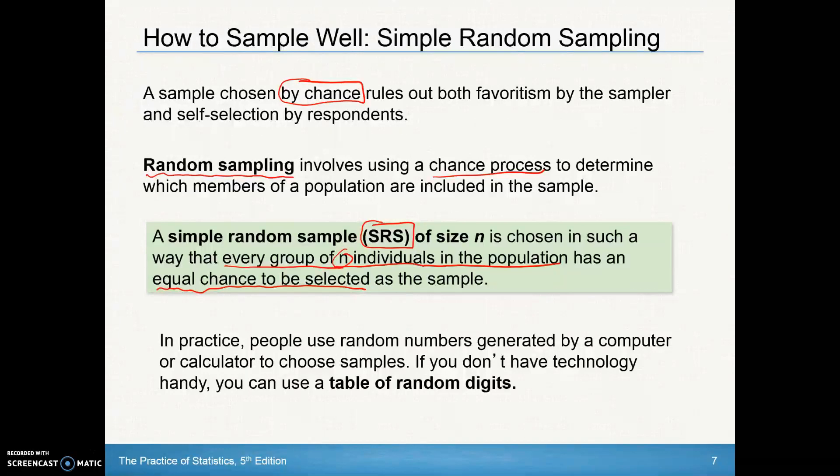So in practice, people use random numbers generated by a computer or a calculator to choose samples, and if you don't have technology handy, you can use slips of paper. You can even use a table of random digits. And that's what we're going to demonstrate here.